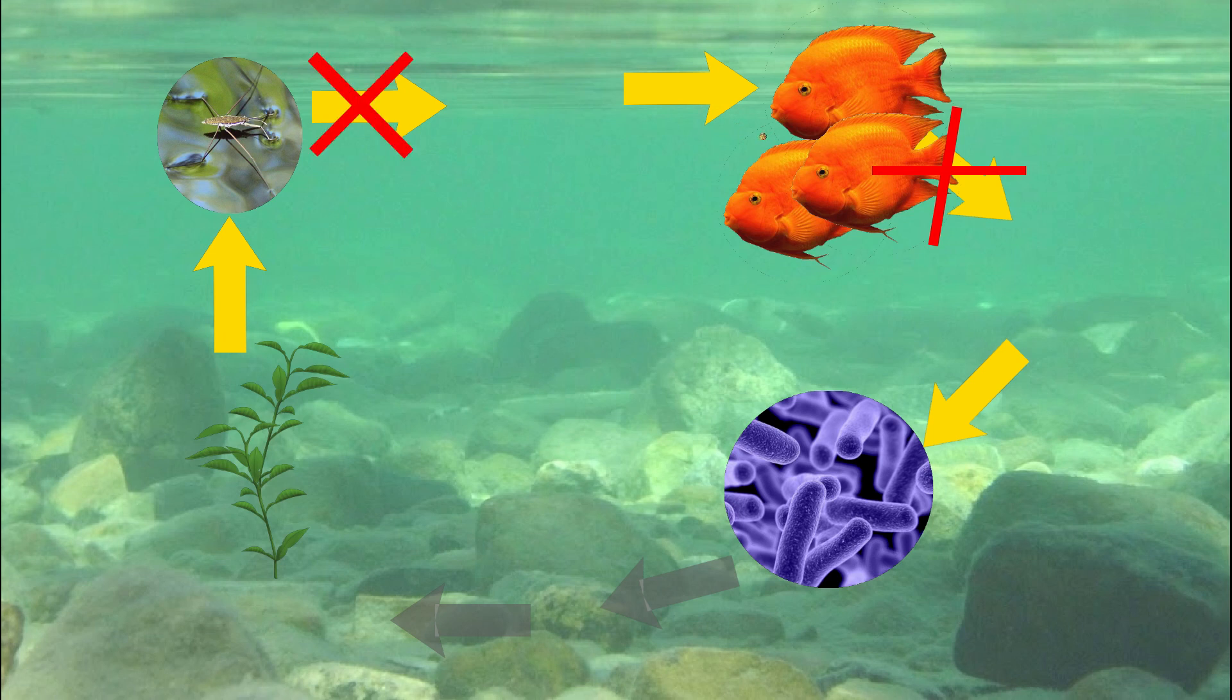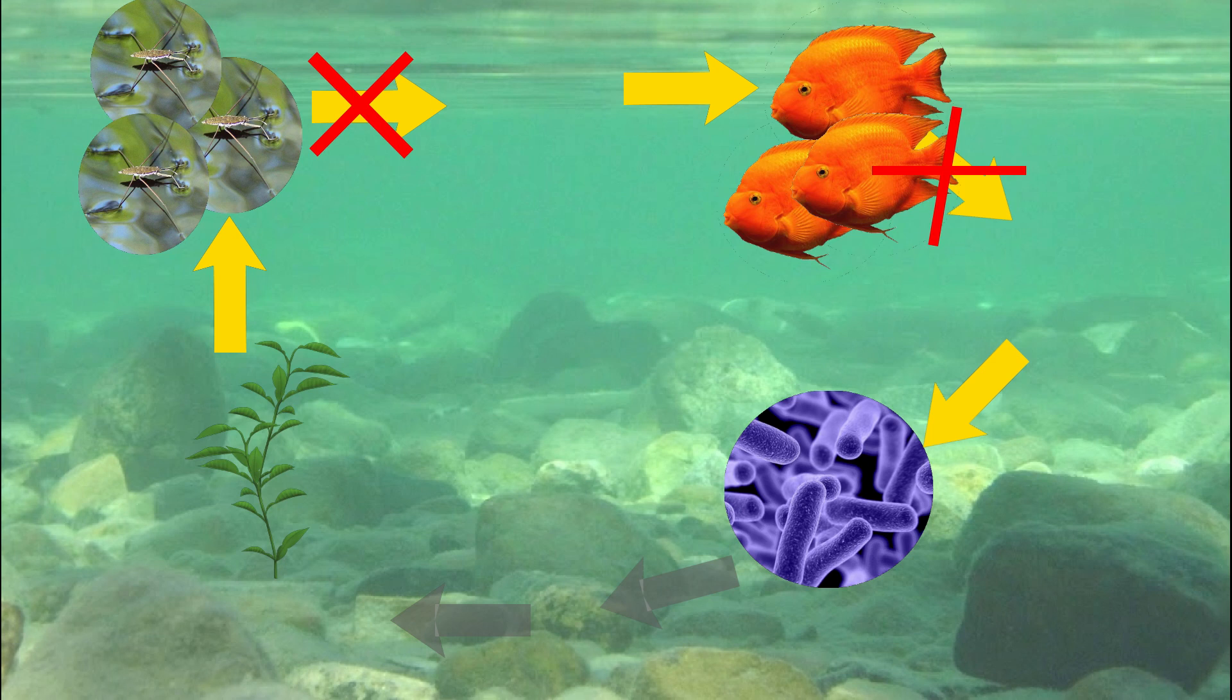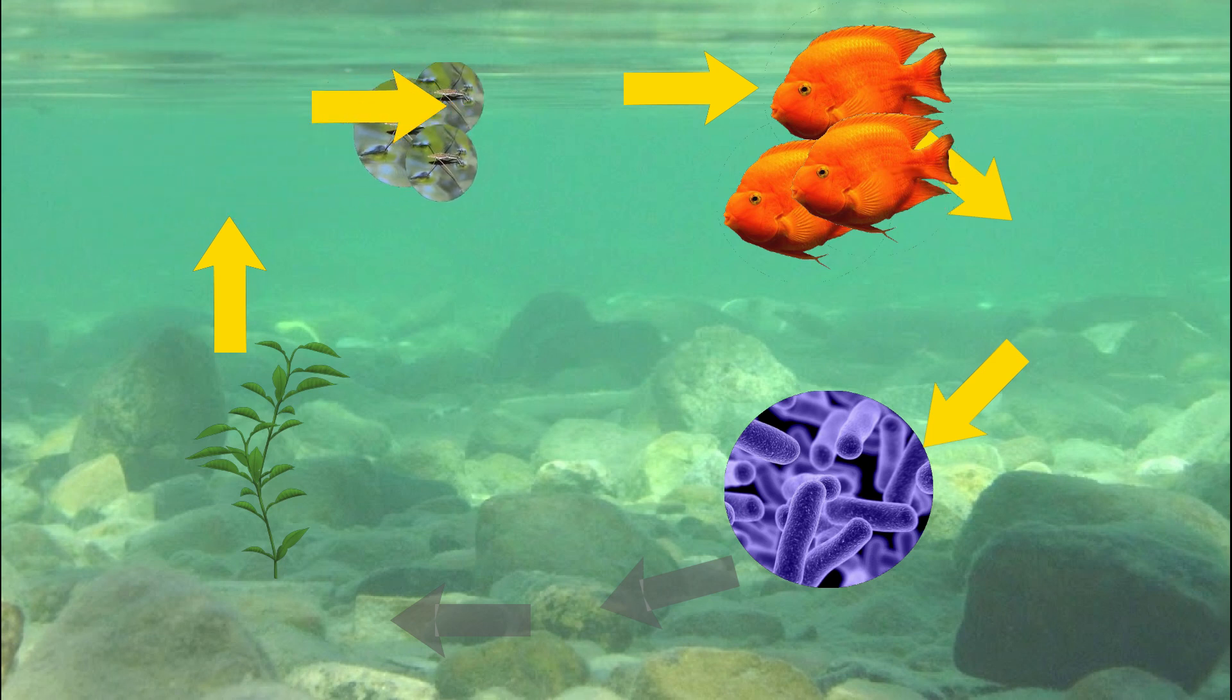Decrease in larvae will result in increase in insects population. After some years, larva will become extinct and the pond will have only fish and insects. Fish will start eating insects and after some years, insects will become extinct.